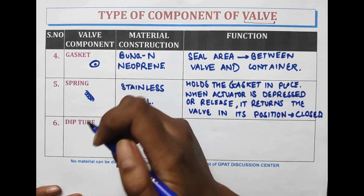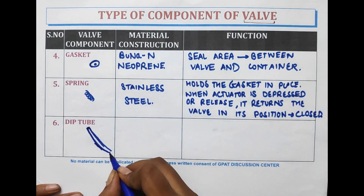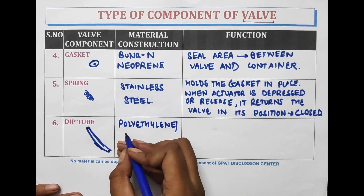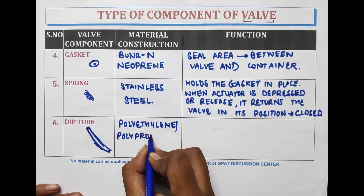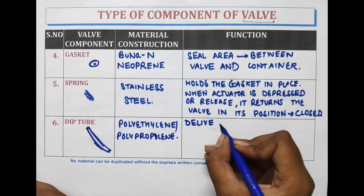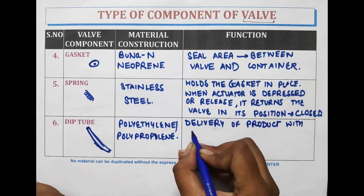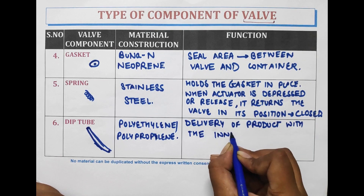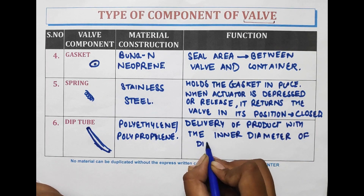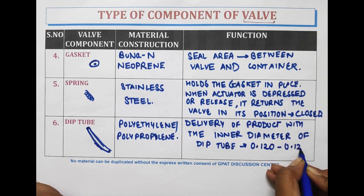The dip tube is made up of polyethylene or polypropylene, and it is a narrow pipe. It is used for the delivery of the product, with an inner diameter ranging from 0.120 to 0.125 inch.